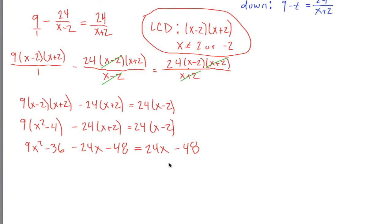Now I want to, since I have a quadratic equation here, I want to set it equal to 0. So I'll subtract 24x from both sides and I'll add 48 to both sides. And what that will give me is 9x squared minus 36. If I subtract 24x from both sides, I'd have negative 48x. If I add 48 to both sides, I just get 0.